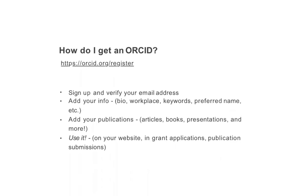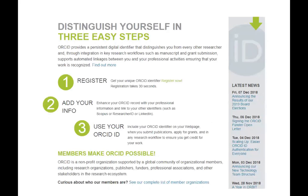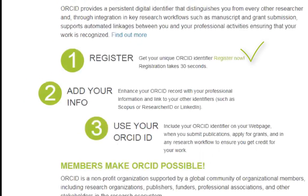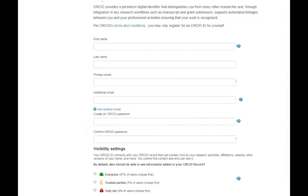It takes about 30 seconds to register for ORCID. All you have to do is sign up on the website and verify your email address. Then you can add your info, add your publications and articles, and then use it on your website, grant applications, and publication submissions. You can also add your ORCID ID to your email signature. If you go to ORCID.org, this is what you will see — all you have to do is click on Register Now, which will lead you to the following page. Fill out your information and set your visibility settings.